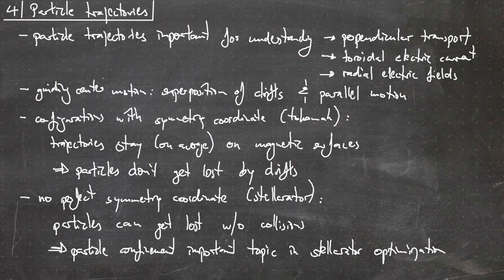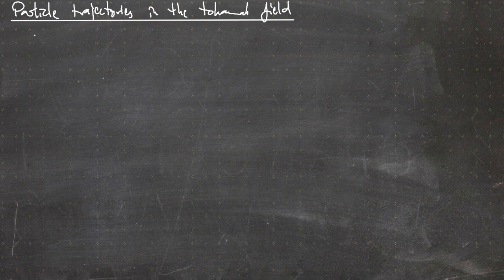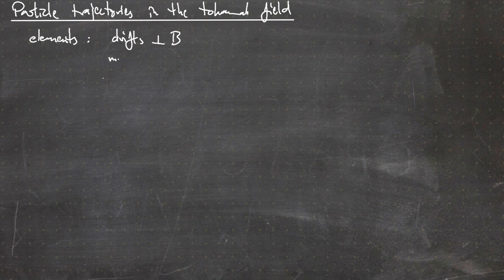Before we talk about stellarators, let's first talk about particle trajectories in the tokamak field, because that's the simpler case. The motion consists of two elements: the drift motion for perpendicular movement, and the parallel thermal motion where particles can be trapped in a mirror, because the magnetic field is non-homogeneous in the tokamak.